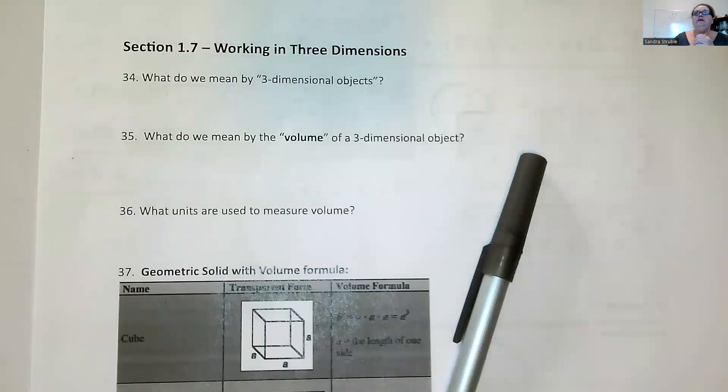And then what do we mean by the volume of a three-dimensional object? Well, the volume is just what it can hold. How much the item can hold is what the volume is representing. So if it's a glass, the volume is how much liquid can it hold? If it's a box, how much space is inside the box to be able to fill up?